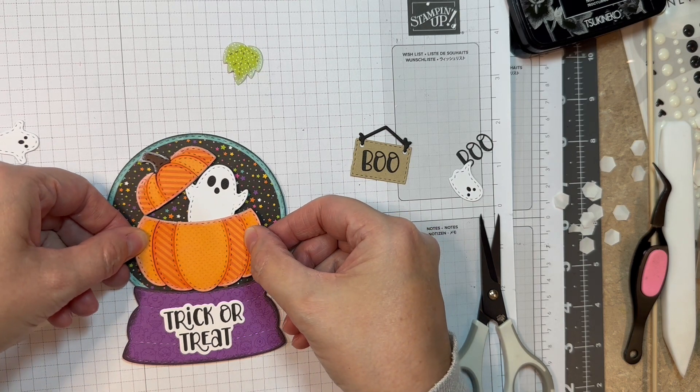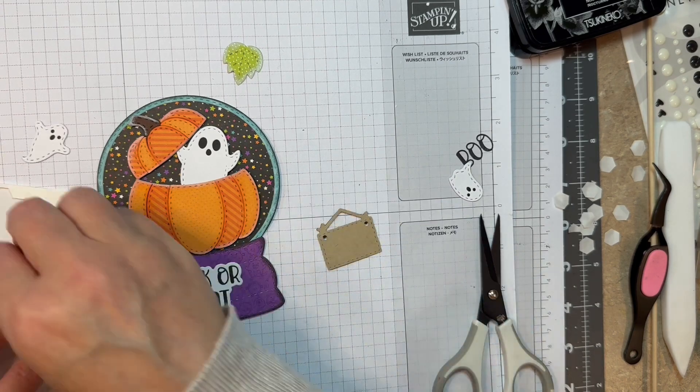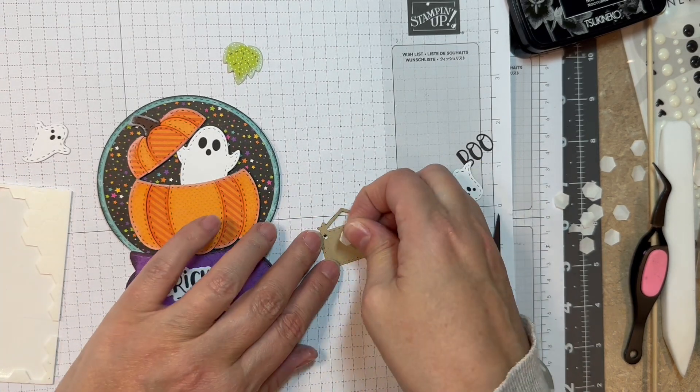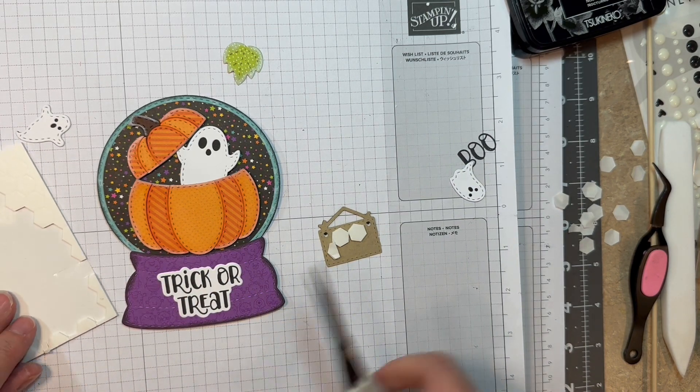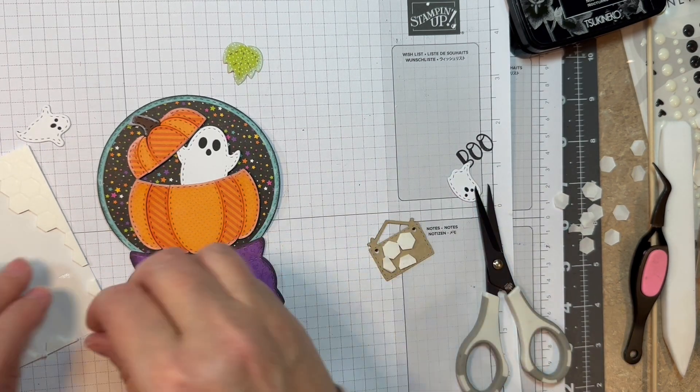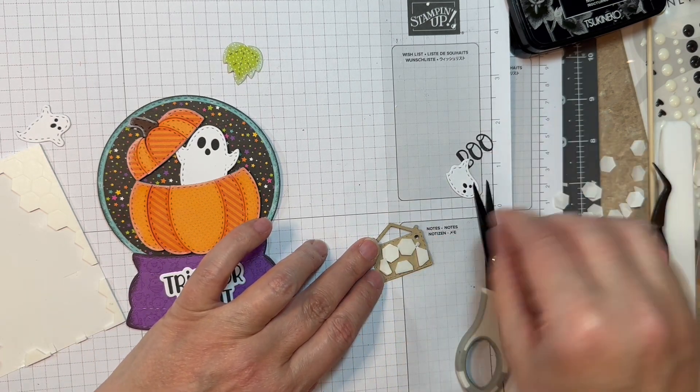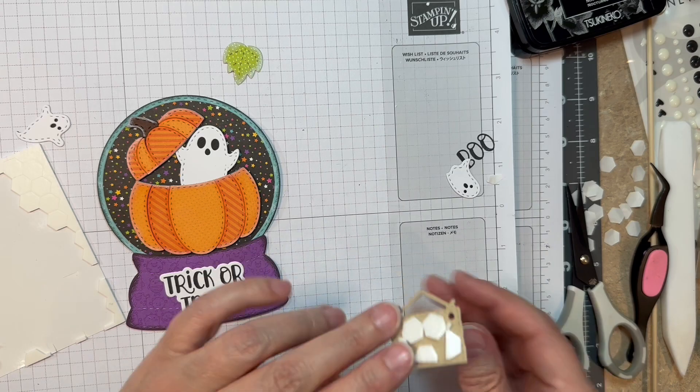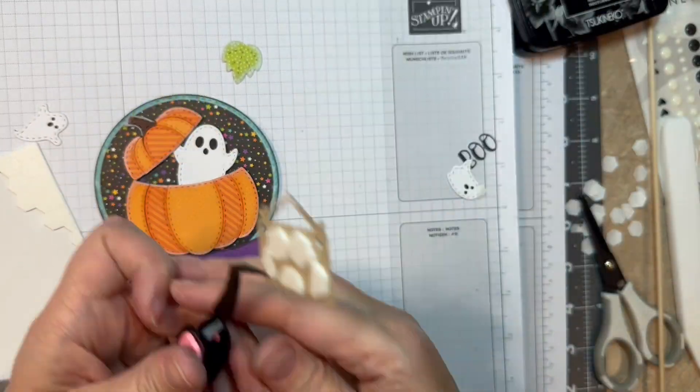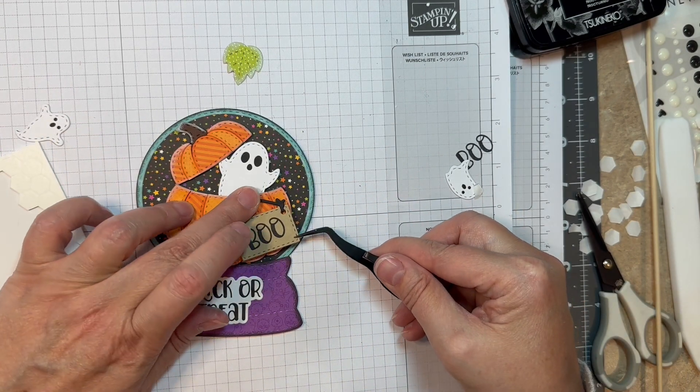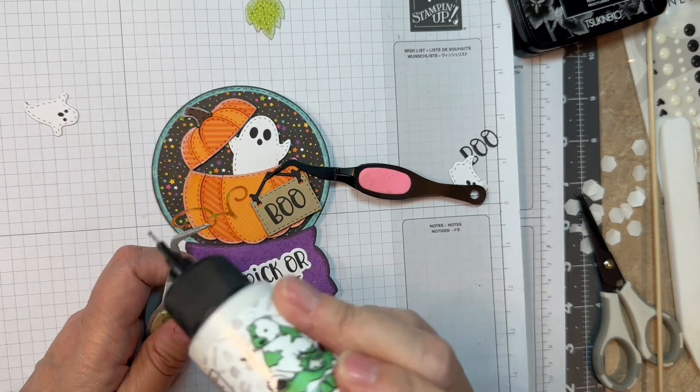I'll use my little scissors to trim some slivers, so everything is nice and evenly popped up from my background. I'm just pulling off all the release papers there. Then I will pop it down onto my card front. This is a super easy card design. I'm going to add my little boo to the front of my card. I'm going to add a little bit of glue onto that string. I will clamp that down.